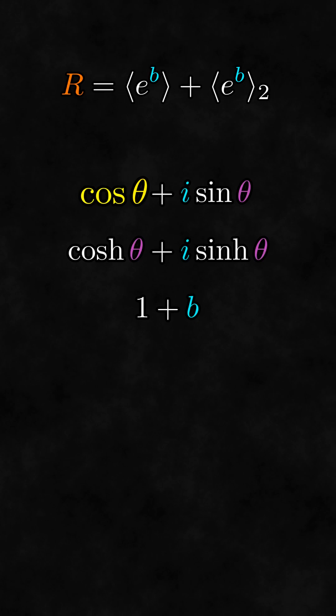The scalar part is always a cosine, a hyperbolic cosine, or 1, and the bivector part is always a sine, a hyperbolic sine, or the original bivector.